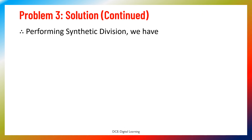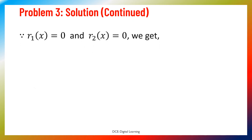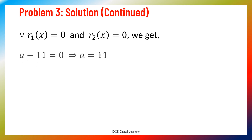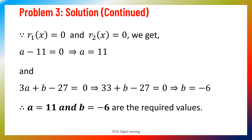From synthetic division, remainder 1 equals 3a + b − 27, and remainder 2 equals a − 11. By the given conditions, both remainders must equal 0, so 3a + b − 27 = 0 and a − 11 = 0. Solving these: a equals 11, and substituting gives 33 + b − 27 equals 0, so b equals −6. Therefore a equals 11 and b equals −6 are the required values.